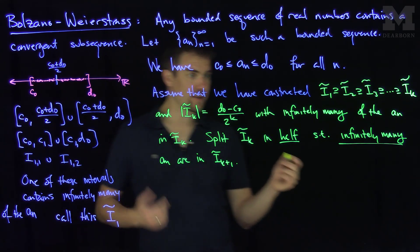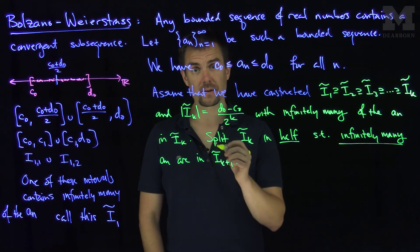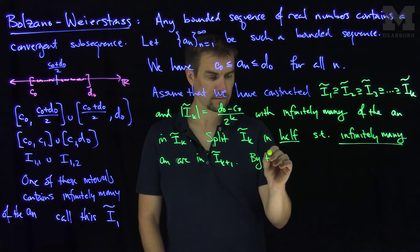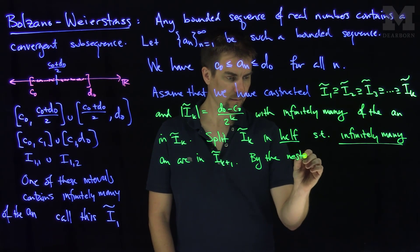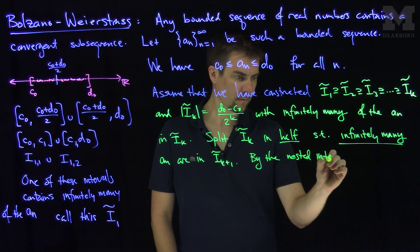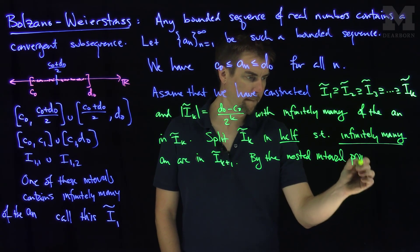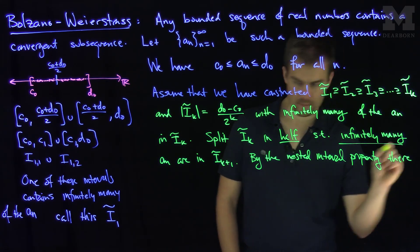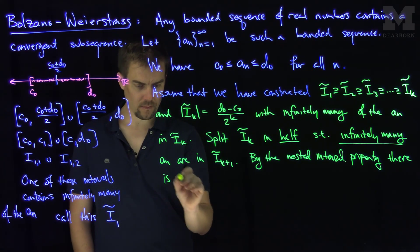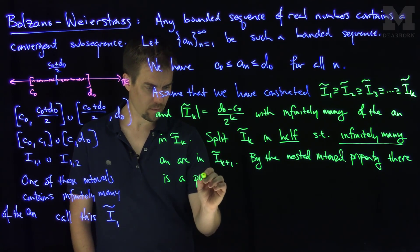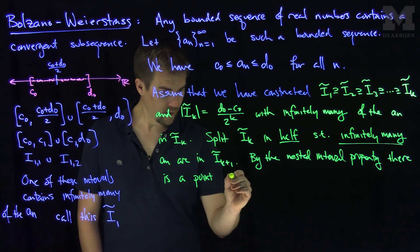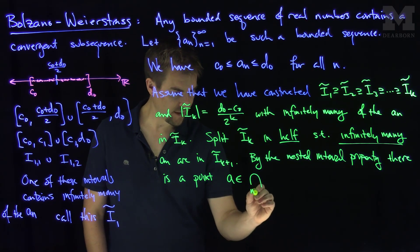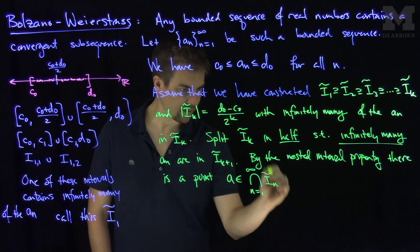And so what we have now is this nested sequence of closed intervals. So by the nested interval property, there is a point a which is in the intersection n goes from 1 to infinity of in tilde.